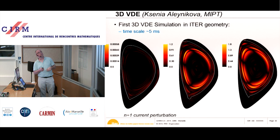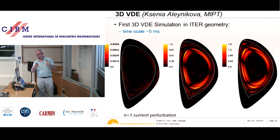These are the currents due to the secondary instability. We need to continue this simulation further — it is difficult — but in the end it will deform the plasma into a 3D shape and allow us to calculate the resulting forces on the wall.